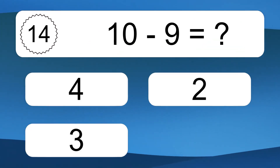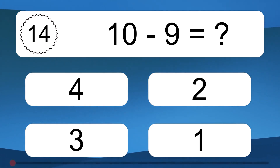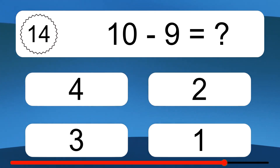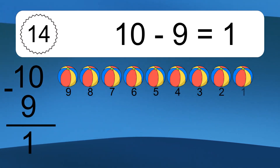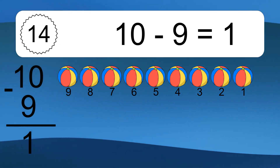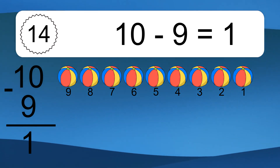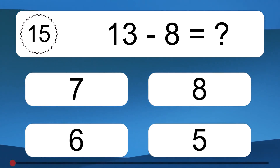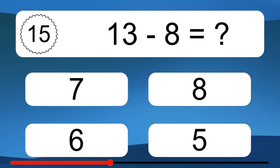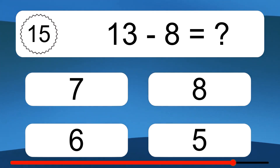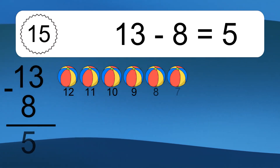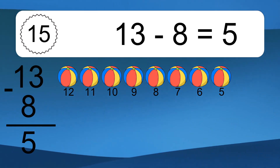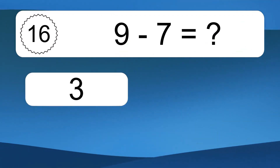10 minus 9 equals what? 10 minus 9 equals 1. Let's count it: 9, 8, 7, 6, 5, 4, 3, 2, 1. 13 minus 8 equals what?